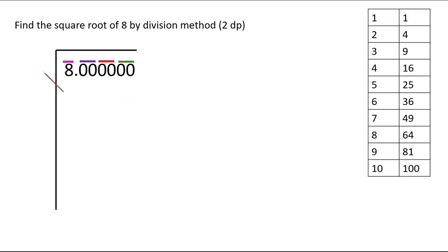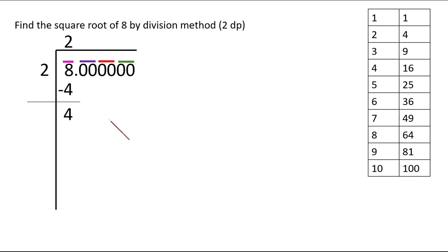We find a number such that multiplying it both sides gives 8 or less. 2×2=4 is appropriate here. 8−4=4. We add 2 below to get 4, leaving some space. We now put the decimal point above, and bring the first two zeros down.